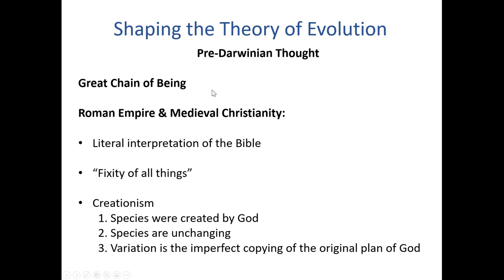From this great chain of being came the idea of the hierarchy of being that was popular in the Roman Empire and medieval Christianity. This came from a literal interpretation of the Bible, which resulted in the idea of the fixity of all things — that everything within the physical forms is unchanging. This idea of an unchanging world came from a very fundamentalist creationism: people believed that species were created by God, that species are unchanging over time, and that variation within species is just the imperfect copying of the original plan of God.